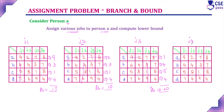Assigning job 4 to person A: its cost is 8. Excluding the same row and same column, for person B the least available cost is 3, for person C it is 1, and for person D it is 6. The lower bound value for this assignment is 18.